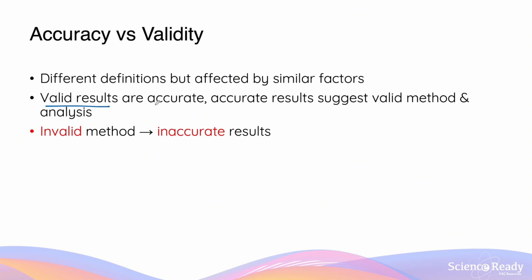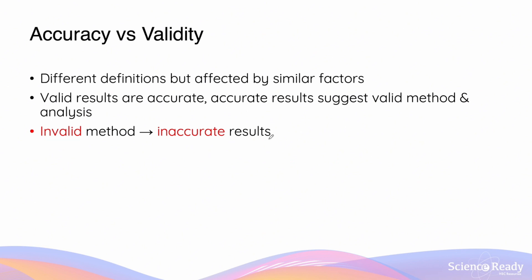Conversely, accurate results suggest that the underlying experiment, method, and analysis are valid. So if your results are valid, they are accurate, and if your percentage deviation is less than five percent, that suggests the method and analysis are both valid. If your method or procedure is invalid — not appropriately addressing the aim and testing the hypothesis — you will most likely have inaccurate results, since an invalid method is unlikely to produce results close to theoretical values.